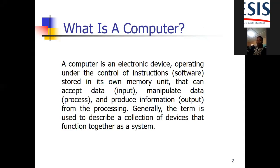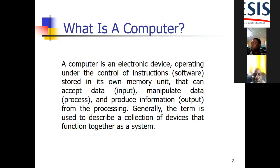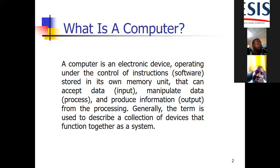Are you all able to see the PPT shared? Great. So we define a computer system to be an electronic device that accepts data, stores that data, processes that data, and then outputs information. Basically, a computer system is an electronic device that is able to convert data into meaningful information.